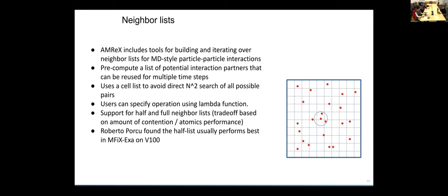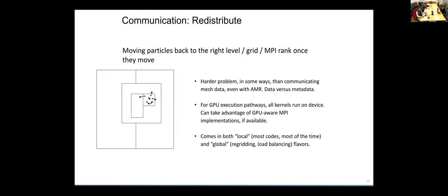For mFix Exa, I usually find that the half neighbor list performs best, again, at least on these modern GPUs that have good hardware support for atomics.